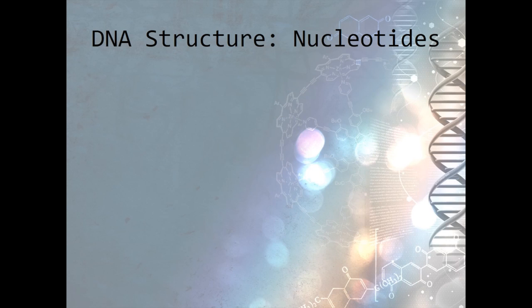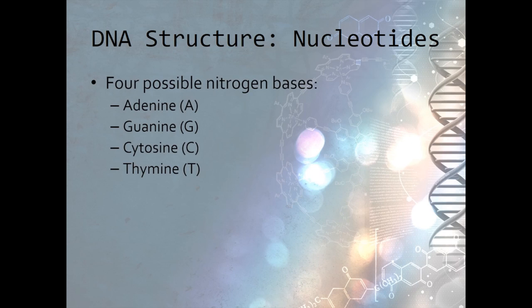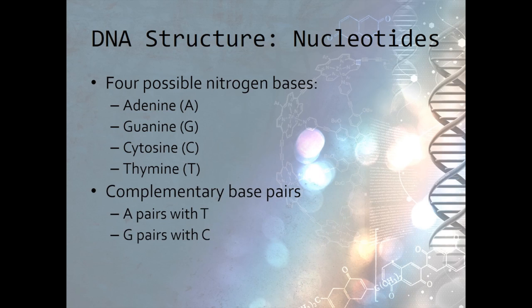These letters designate the nitrogen base for the nucleotide. There are four possible nitrogen bases: adenine (A), guanine (G), cytosine (C), or thymine (T). These bases bond to form complementary pairs. A always pairs with T, and G always pairs with C.